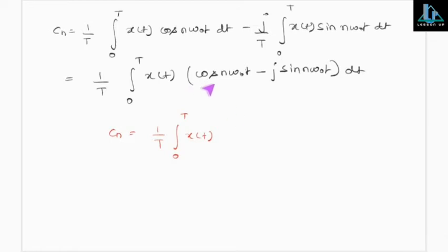Now, cosθ - jsinθ equals e^(-jθ). So cₙ = (1/T)∫₀ᵀ x(t)·e^(-jnω₀t) dt.